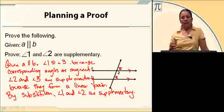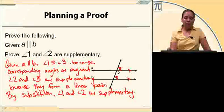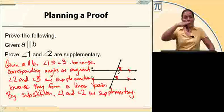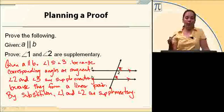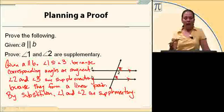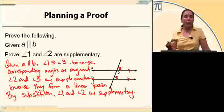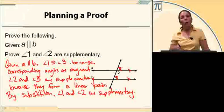So what I did is: I was given the fact that A and B are parallel. Because they're parallel, angle one and angle three are congruent — corresponding angles. I also can see that two and three are supplementary because they form a linear pair — they make a line. And then using substitution, I can say that angle one and angle two are supplementary.